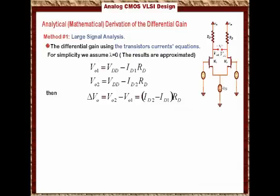Then we can say that let ΔID equal to ID2 minus ID1, then ΔVout will equal to ΔID times RD. I substituted for ID2 minus ID1 in terms of ΔID, that's all what we did.